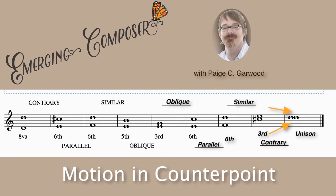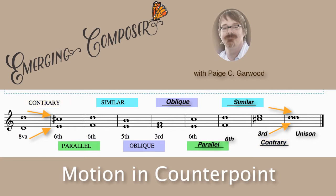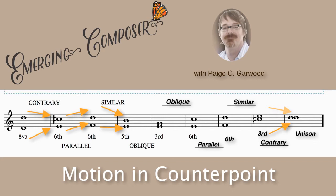To review, we have four kinds of motion. Contrary: both voices moving in opposite directions. Parallel: both voices moving in the same direction, starting and ending on the same intervallic distance — in our example, from a sixth to a sixth in measures two and three. Similar: both voices move in the same direction but end up on a different interval than they started — we went from a sixth to a fifth in measures three and four. Oblique: one voice stays the same and the other voice moves.